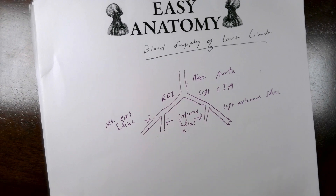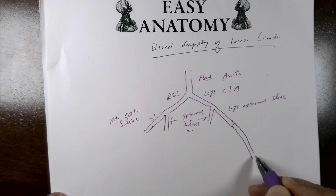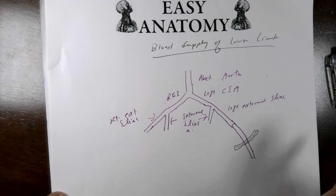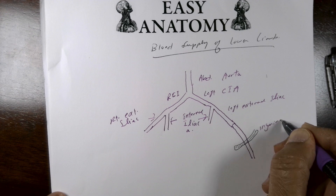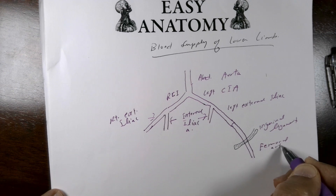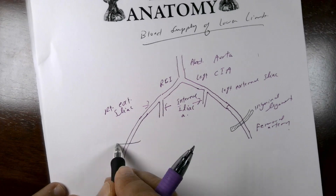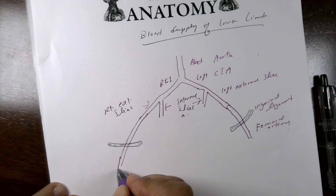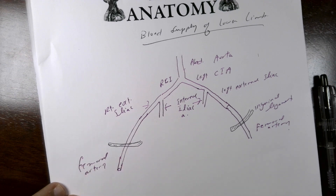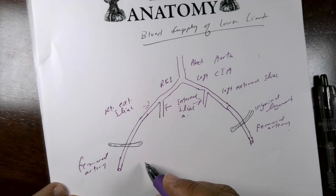The external iliac artery continues into the lower extremity as the femoral artery, passing behind the inguinal ligament. This is the inguinal ligament, and this is the femoral artery. The same occurs on the other side — it extends behind the inguinal ligament to continue as the femoral artery, which is the main arterial supply of the lower extremity.